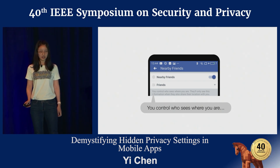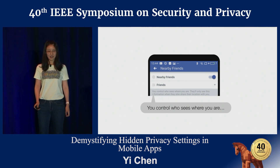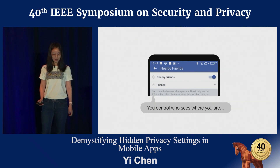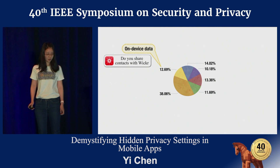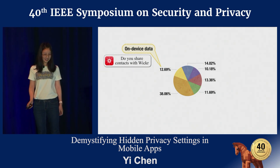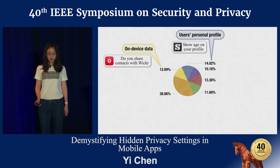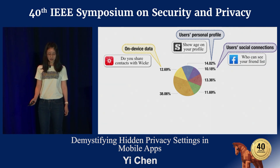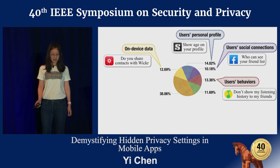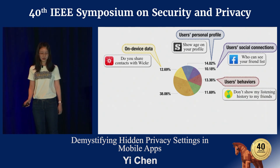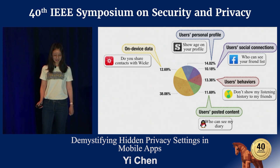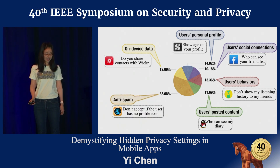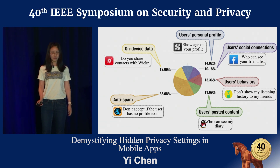We collected 600 privacy settings from 200 apps. According to the data they protect, the settings can be classified into six categories: on-device data such as whether you share contacts; users' personal profile such as show age on your profile; users' social connections such as who can see your friend list; users' behavior such as don't show my listening history in a music app; users' posted content such as who can see my diary; and anti-spam such as don't accept users with no profile icon.